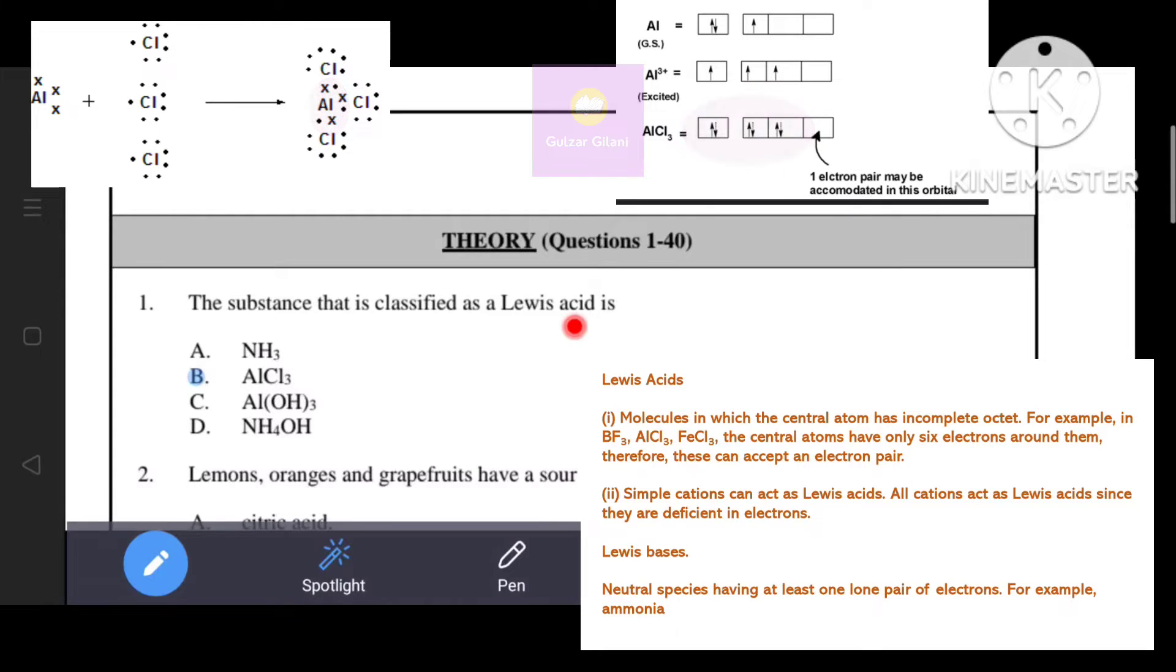The central atoms have only 6 electrons around them. Therefore, this can accept an electron pair. Simple cations can act as Lewis acids. All cations act as Lewis acids since they are deficient in electrons. This is why the given option is the correct answer, that is option B, AlCl3, Aluminium Chloride.